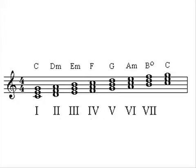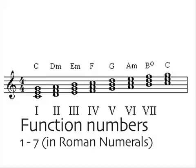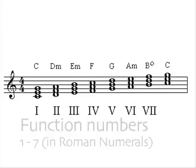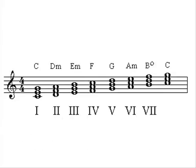As well as having a chord symbol, we can give each chord a function number, simply based on the step of the scale, one through to seven. Roman numerals are used for this. So chord one is the tonic or keynote chord, two is on the second step of the scale and so on.